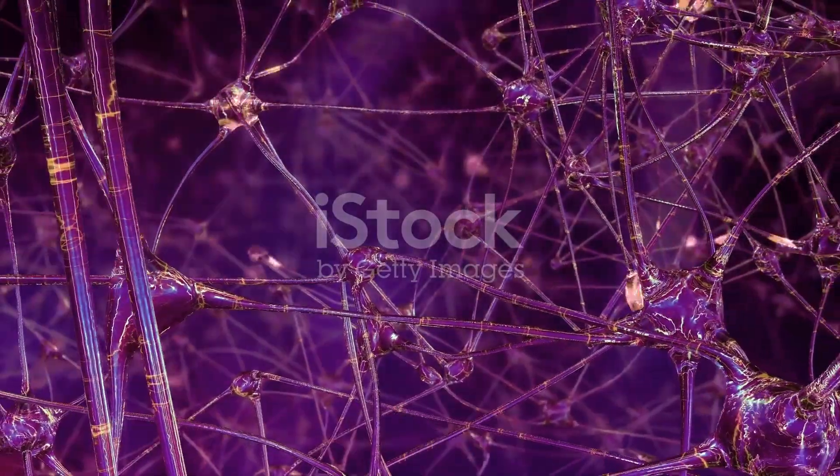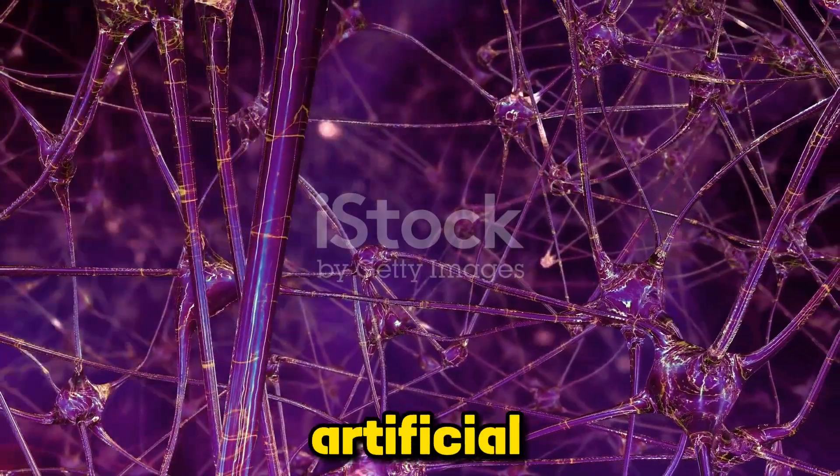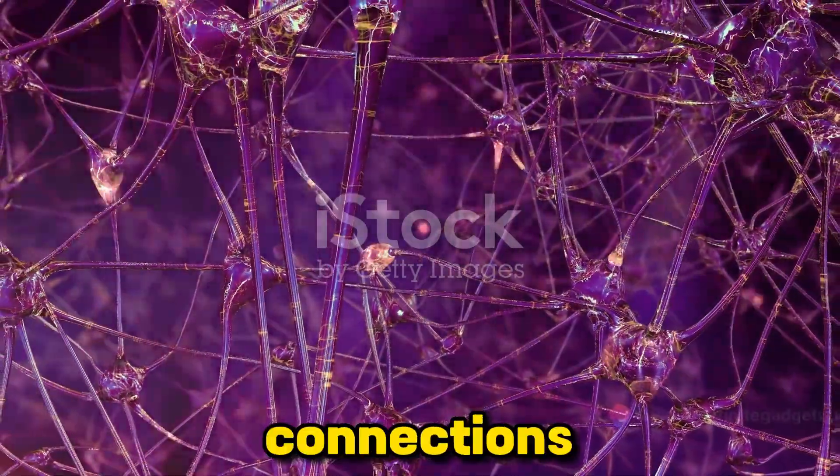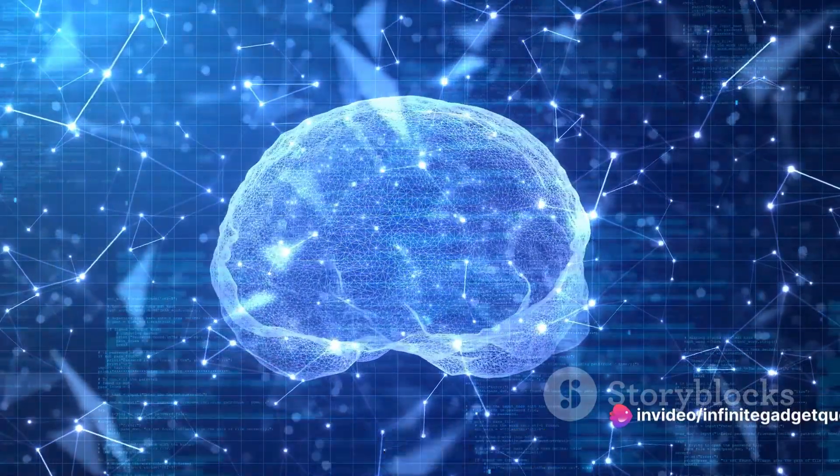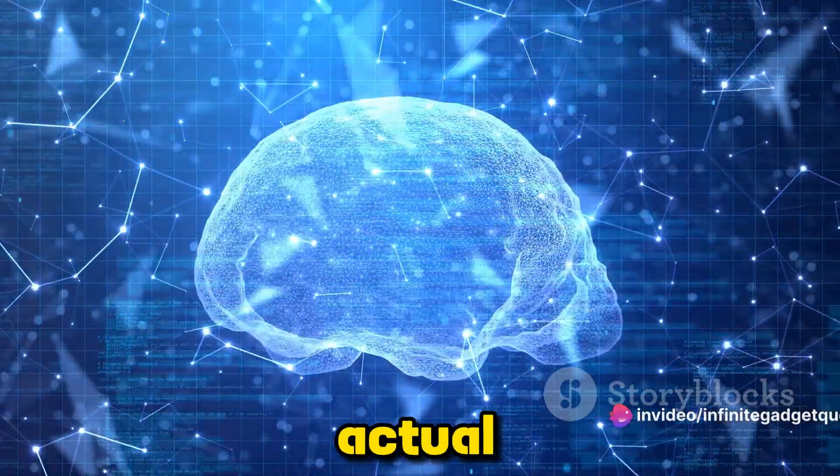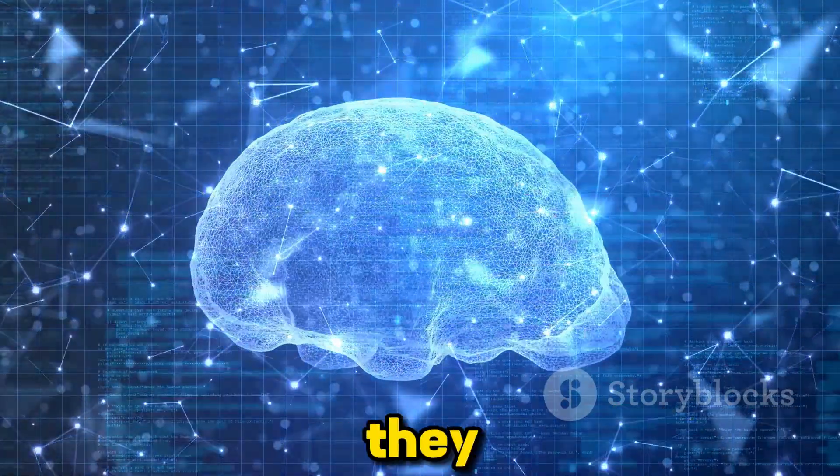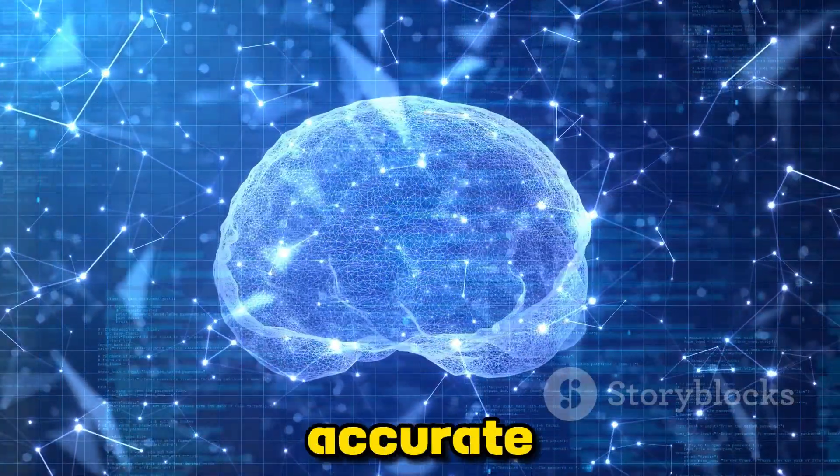They observe patterns in the data we feed them and adjust their artificial neurons, which are the connections within the network. These adjustments are made based on the differences between the network's predictions and the actual outcomes. The more examples they see, the better they get at making accurate predictions.